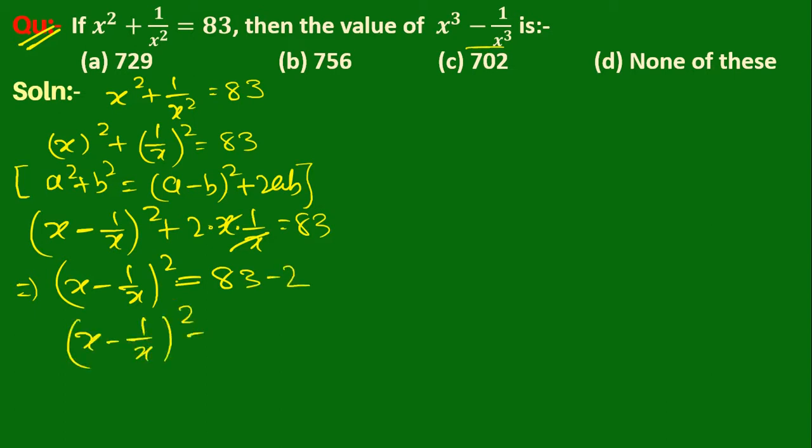So (x - 1/x)² is equal to 81. Since 81 is 9², taking the square root gives us x - 1/x = 9.